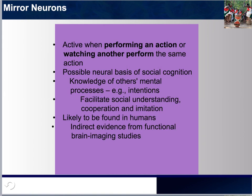You would then be performing an action simply because you watched it. This is possibly a neural basis explanation for social cognition — if you and I are able to understand other people's mental processes, it may assist in facilitating social understanding, cooperation, and imitation. If there is a person crying, even though I may not know them, it seems almost automatically the majority of individuals would stop laughing and empathize. Because of this, we believe mirror neurons are found in humans, but again there is no direct evidence from fMRIs.